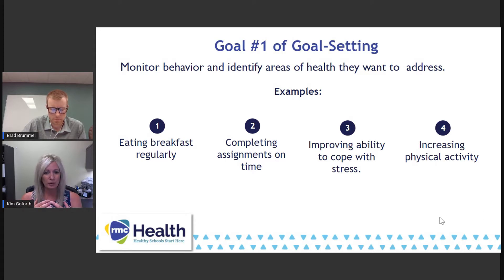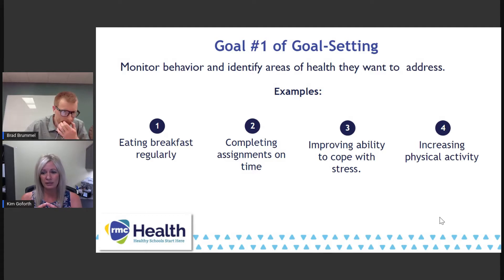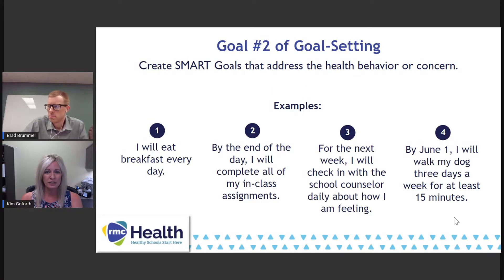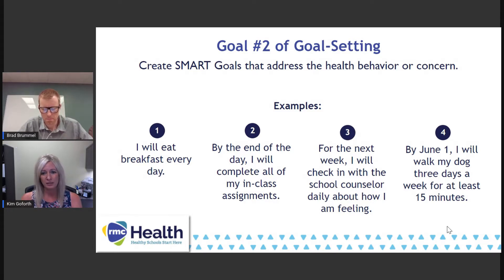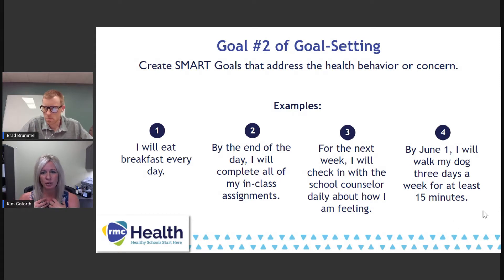Goal one — some examples include improving ability to cope with stress. I think we've all had quite a year dealing with COVID, and the first part of goal one is to identify where do we need to focus. Goal two of the goal setting standard talks about probably the most familiar and common thing we associate here: creating a SMART goal — not just what the letters mean, but really creating one that addresses goal one. An example for stress: for the next week, I'll check in with the school counselor about how I'm feeling, or with another trusted adult in the building.